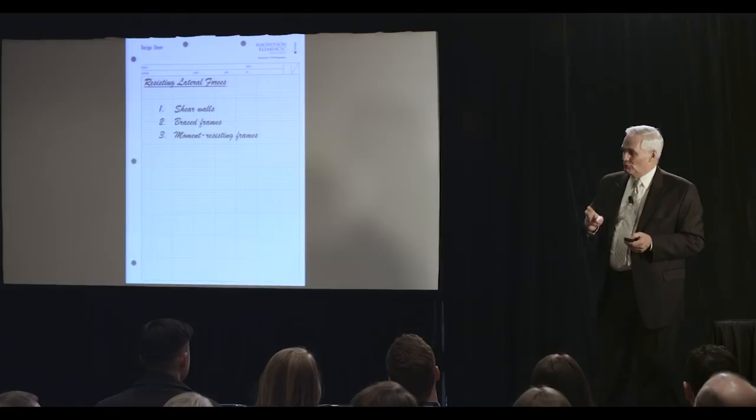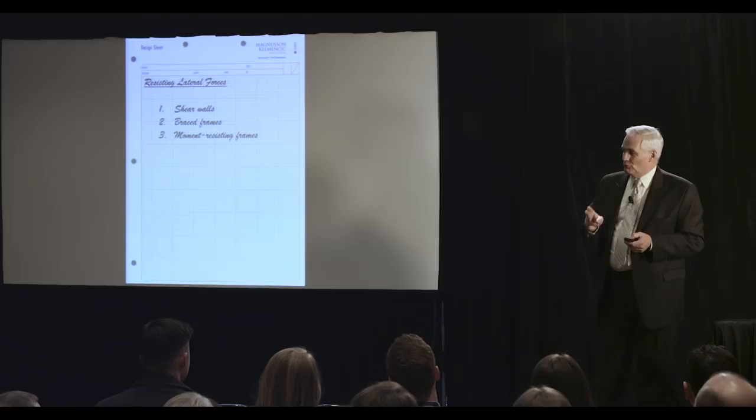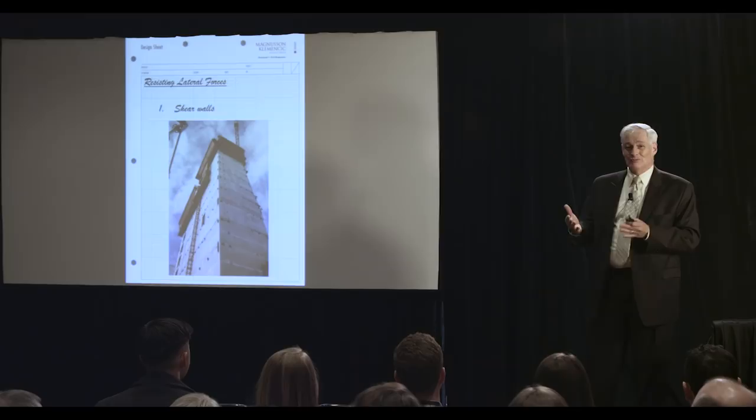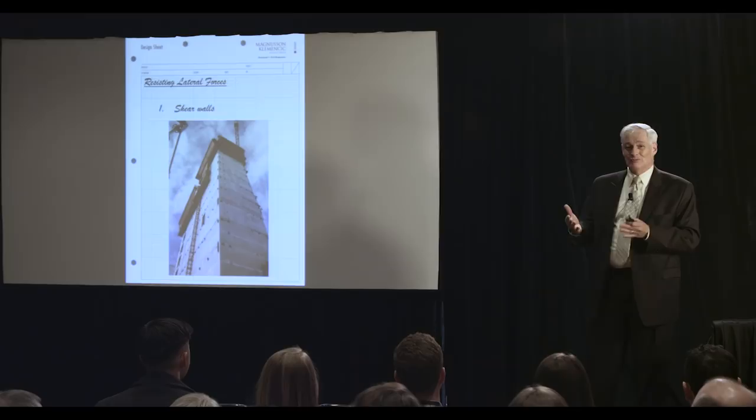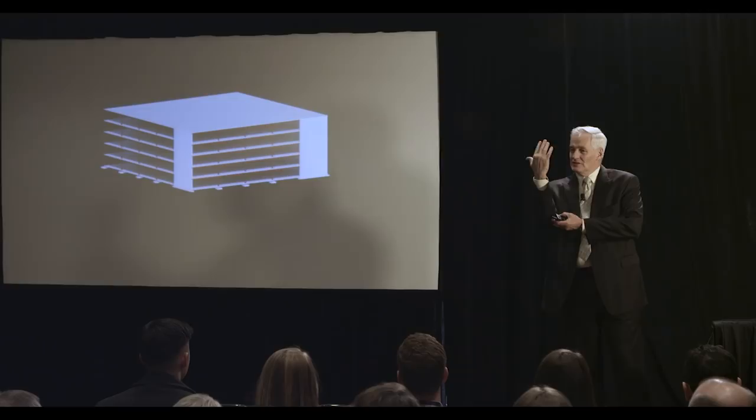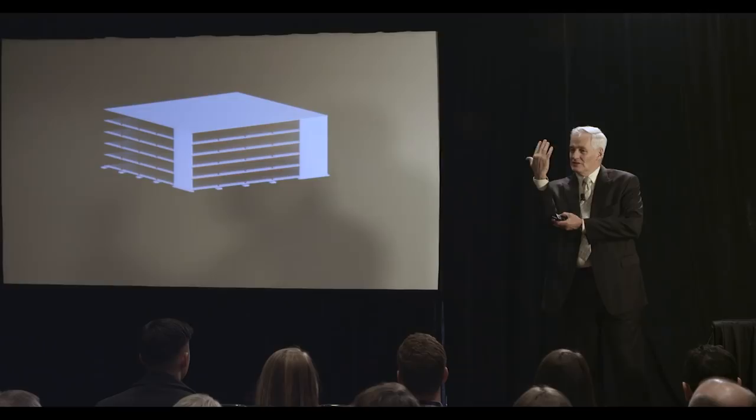So shear walls, probably the most common type of lateral system in the northwest. And typically concrete. Even if it's a steel building, a lot of times the shear walls are concrete. And you look at how it works. You take that gravity system and you put some walls in it. And through the bending and shear resistance of those walls, that's what keeps those floors from being able to move side to side.